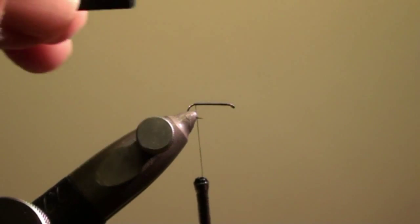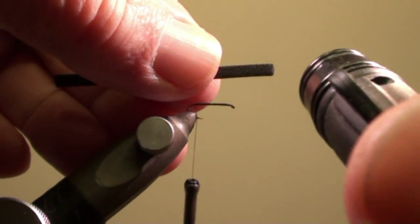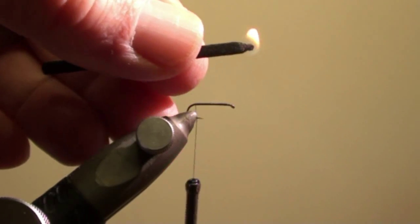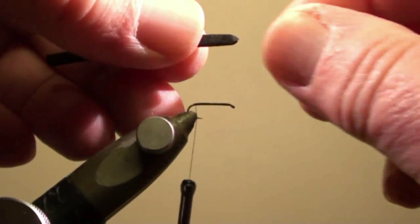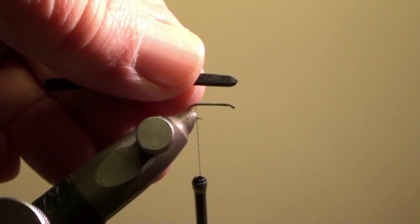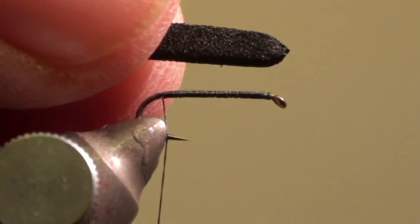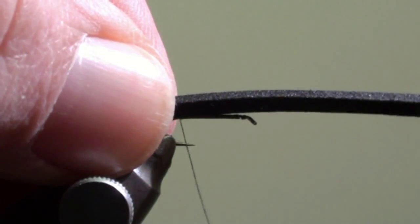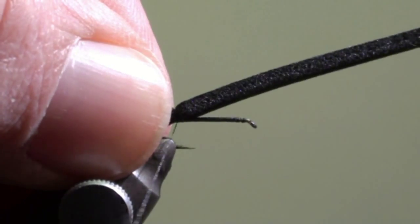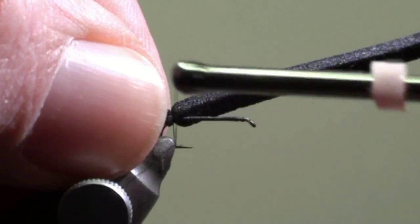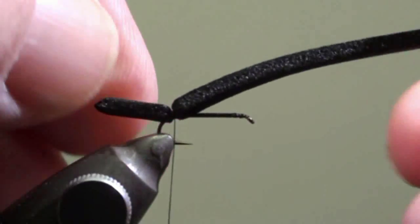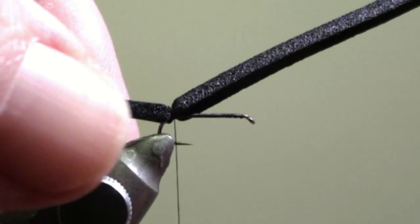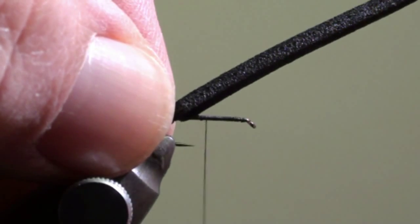We will cut a 5mm strip of black foam and using a lighter we will burn the tip of the foam. With your wetted fingers shape the tip. Now we will tie in the foam in such a way that it extends over the curvature of the hook by approximately the length of the hook shank. Tie in the foam and then wind a few turns under the foam around the hook shank to the middle of the hook shank.